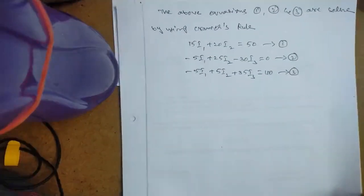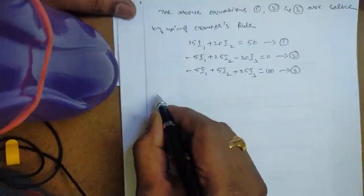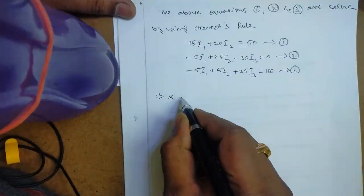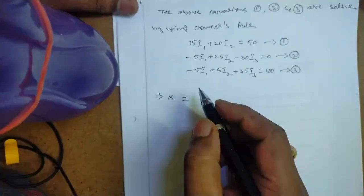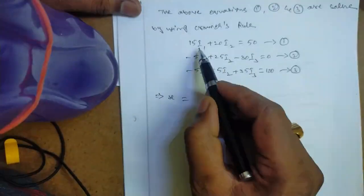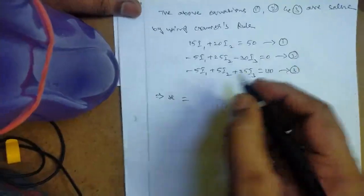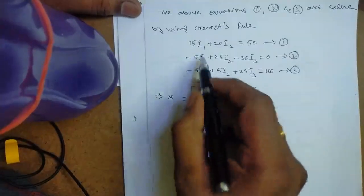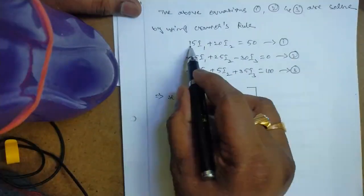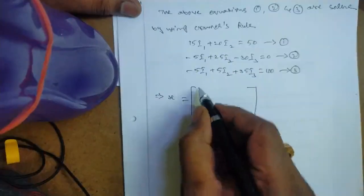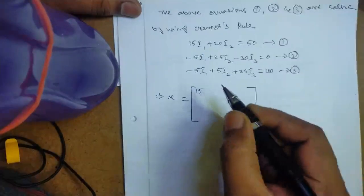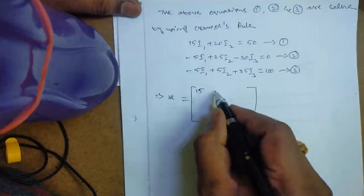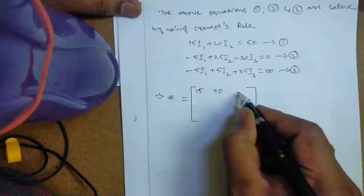Now we follow Cramer's rule. First, matrix X. Let's take matrix X. Matrix X contains the coefficients of i1, i2, and i3. From the first equation, the coefficient of i1 is 15, the coefficient of i2 is 20, and i3 is 0.